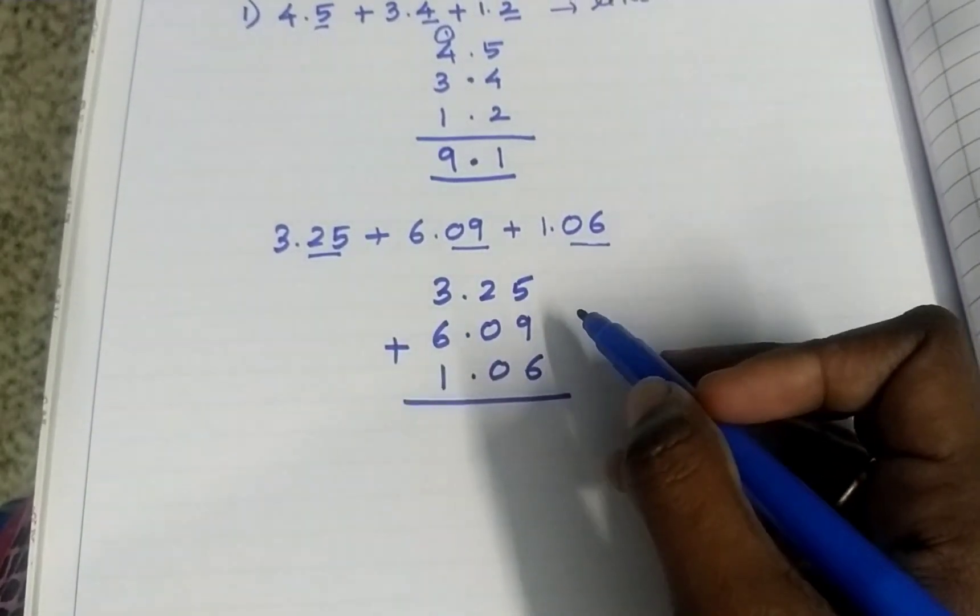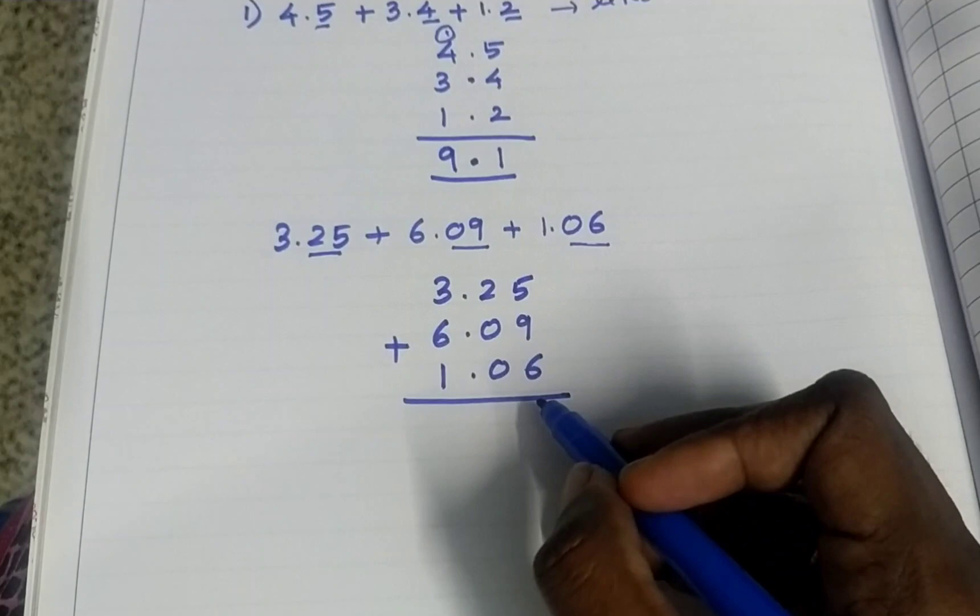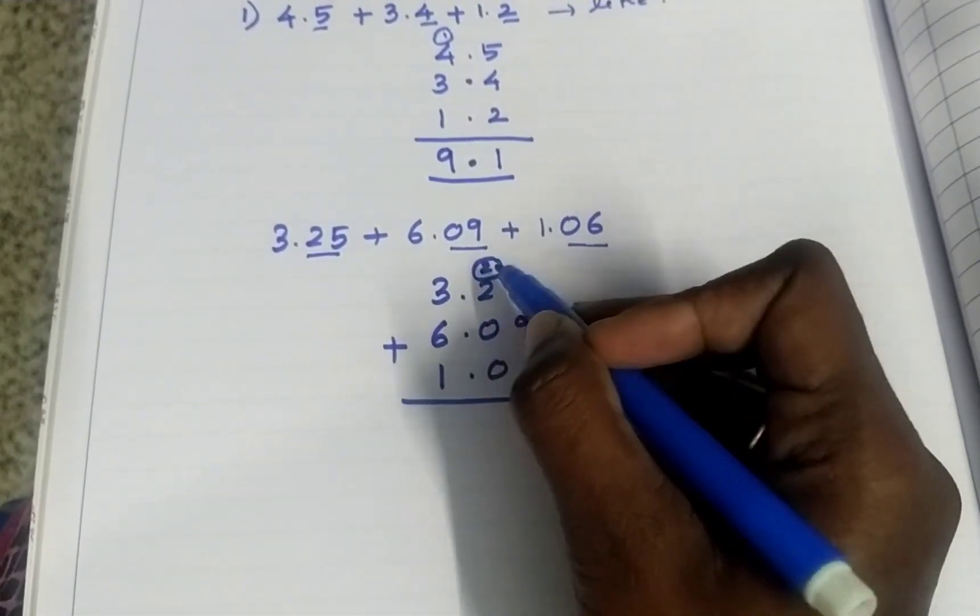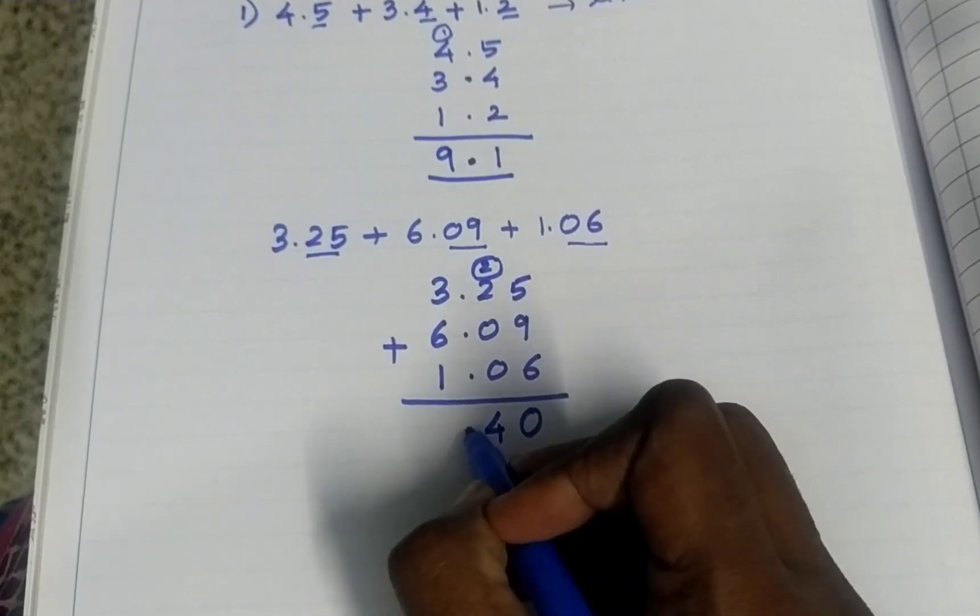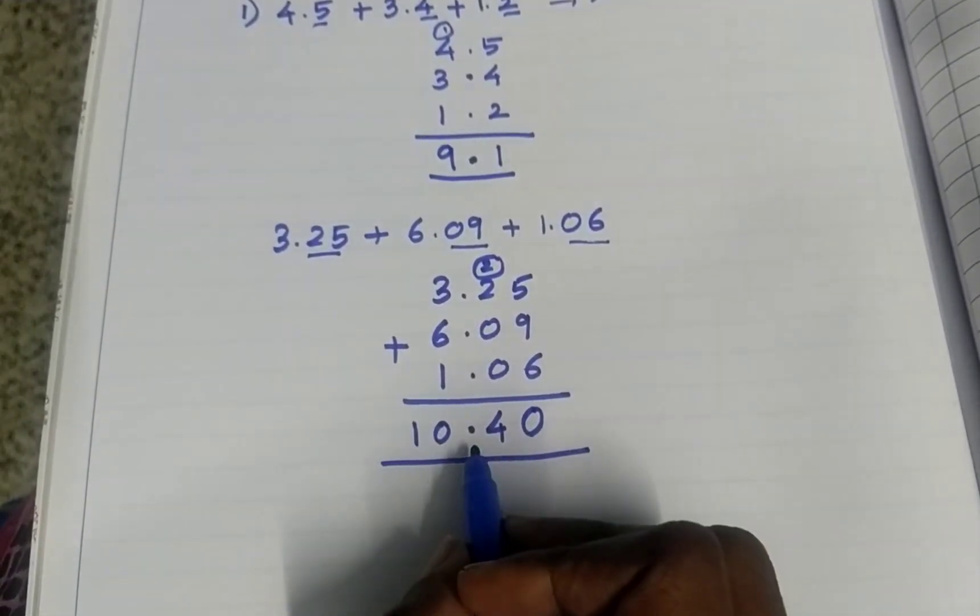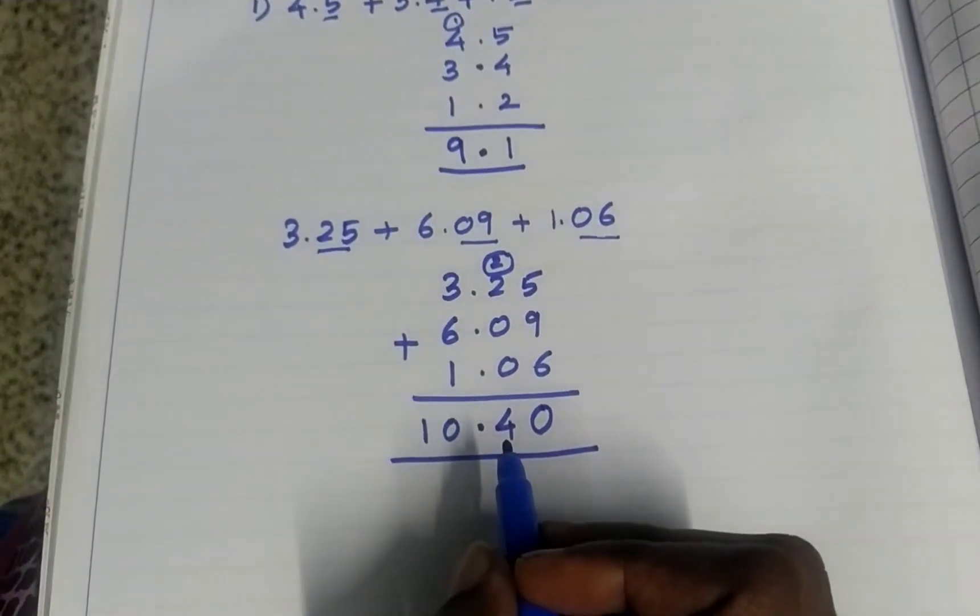Now add like a normal addition. 5 plus 9, 14. 14 plus 6, 20. Same 0. Carry over to the next place. So 4. Point should be kept. 9, 10. There should not be more than one point. Only one point in one place. So this is the answer.